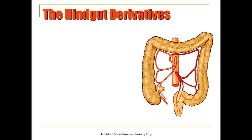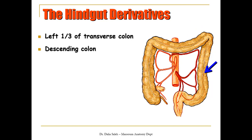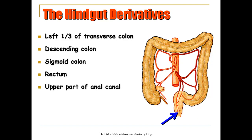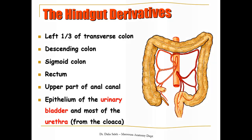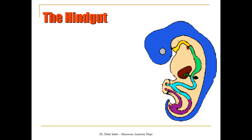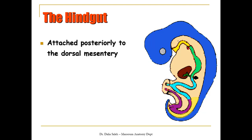Let me remind you of the hindgut derivatives in the adult: the left third of the transverse colon with the left colic flexure, the descending colon, the sigmoid colon, the rectum, and the upper part of the anal canal. Also, the hindgut gives the epithelial lining of the urinary bladder and most of the urethra, as they are derived from the cloaca.